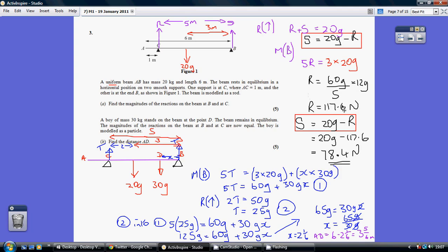So substituting that into the equation from earlier on, I can get S being 78.4 Newtons. So R is 117.6, that's the reaction at C. And S is 78.4, that's the reaction at B.